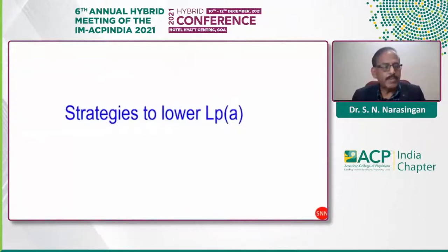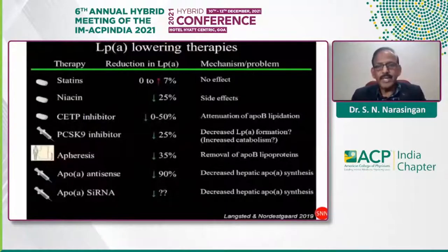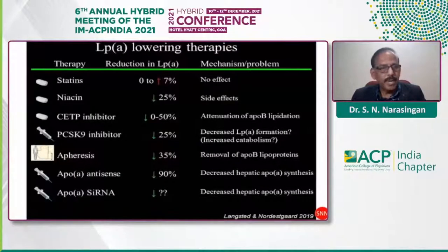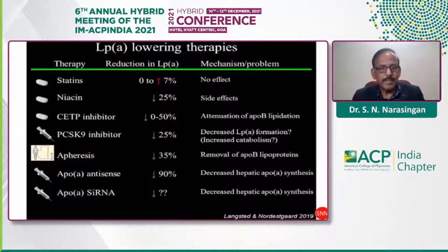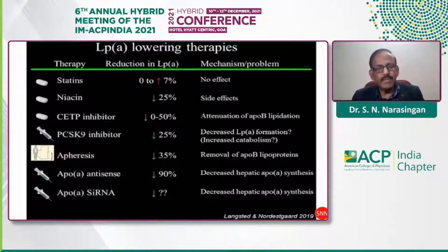Regarding strategies to lower lipoprotein(a): statins are likely to increase Lp(a) levels — past information indicated up to a 7% increase, though recent studies have not shown that much increase. Niacin reduces lipoprotein(a) levels by 25%, but we do not have cardiovascular outcome data.